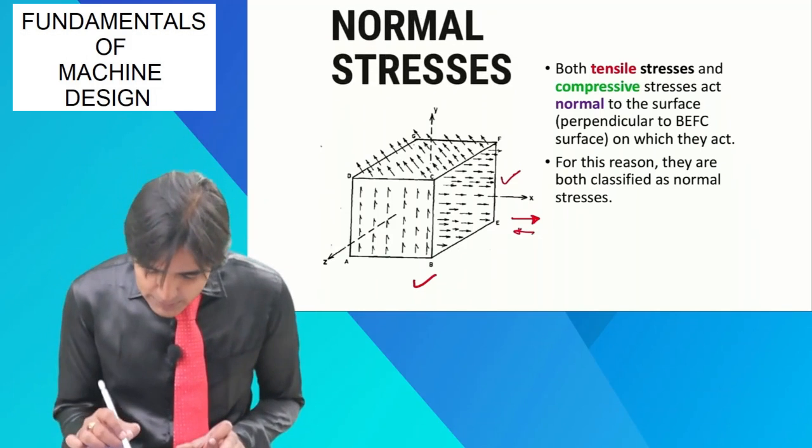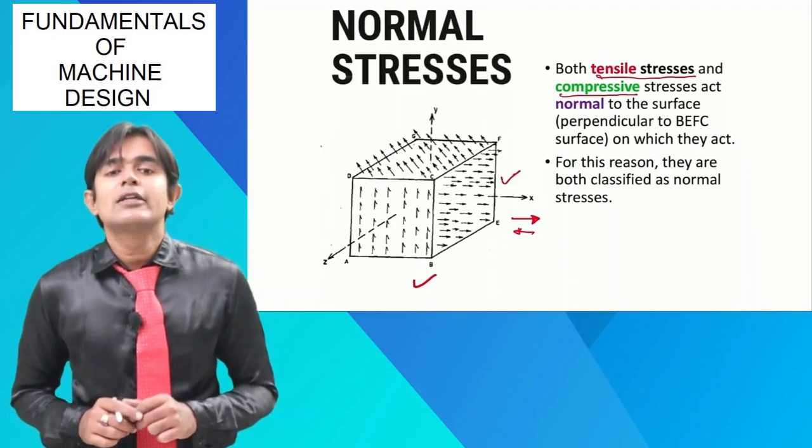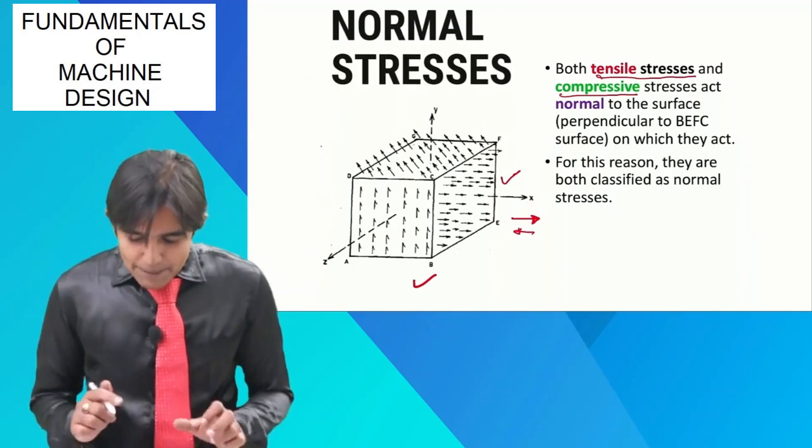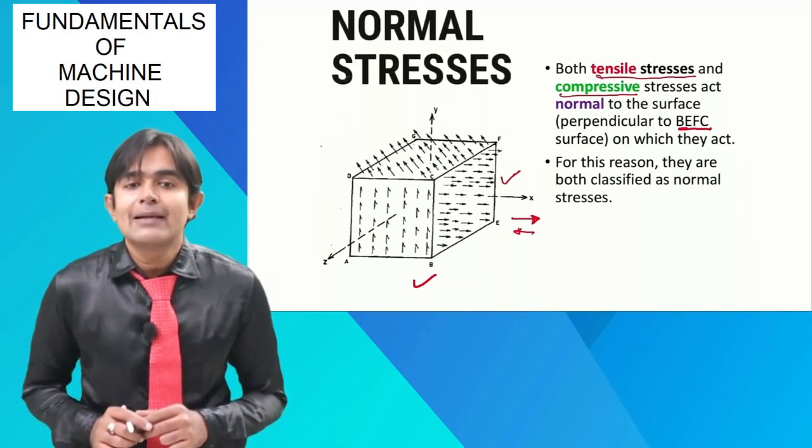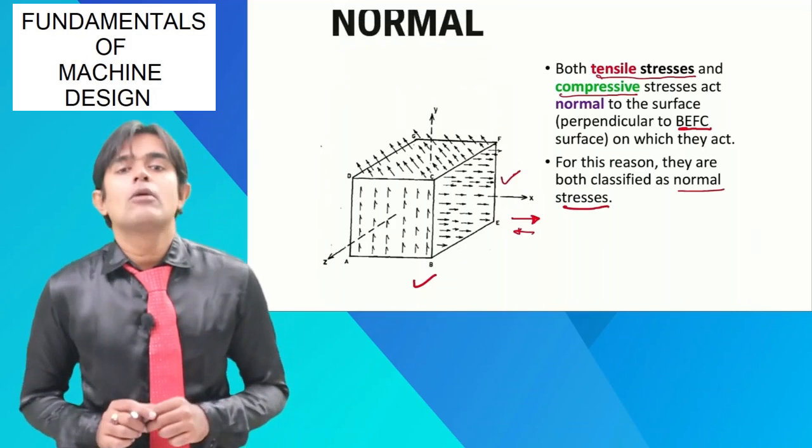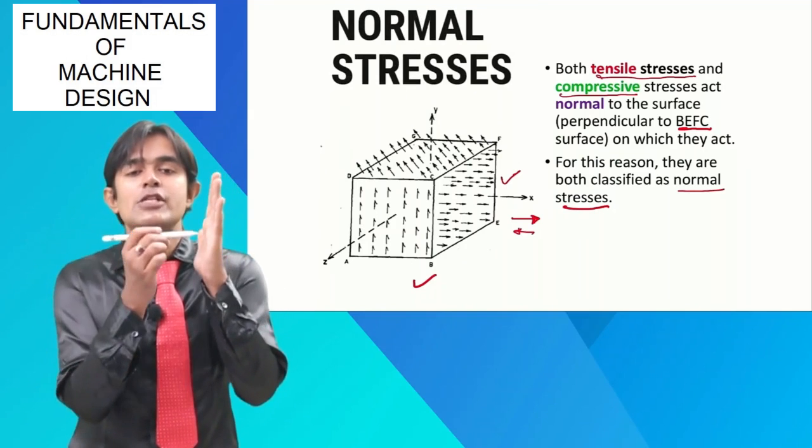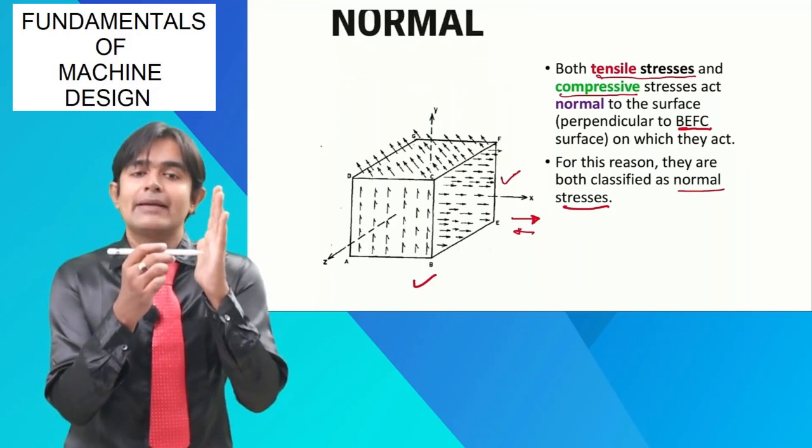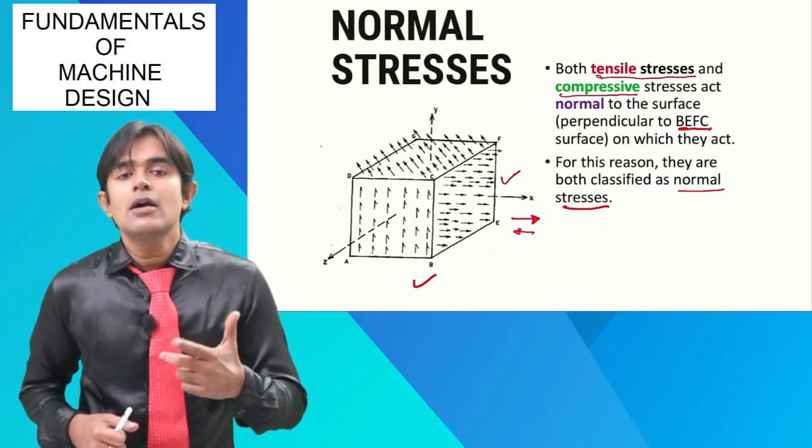Both tensile stress and compressive stress act normal, which is perpendicular to BEFC on which they are acting. These types of stresses are called normal stresses since they are acting in the perpendicular direction to the phase on which they are acting. So tensile stress and compressive stress are normal stresses.